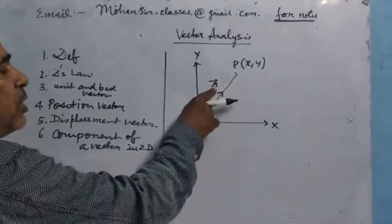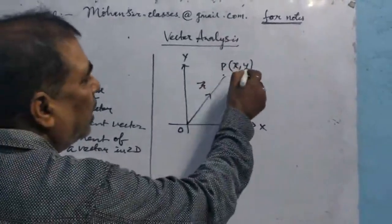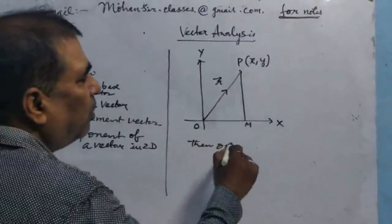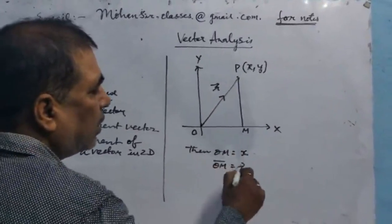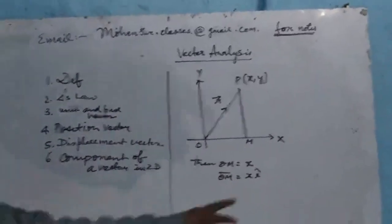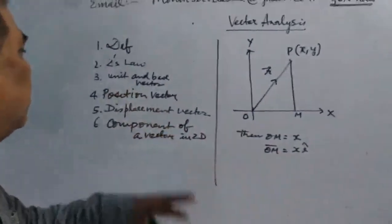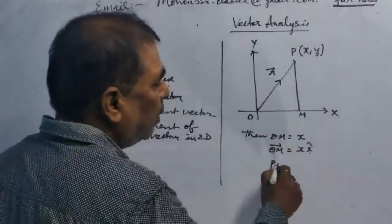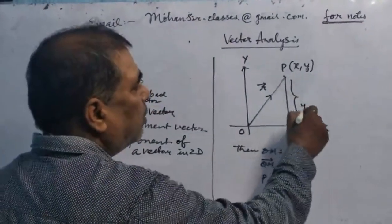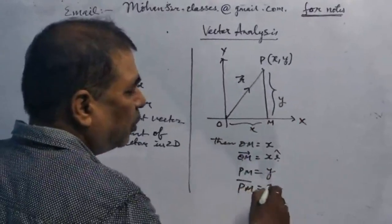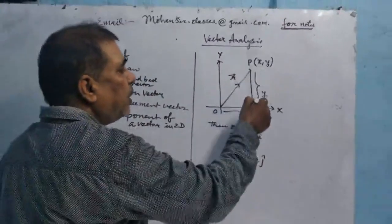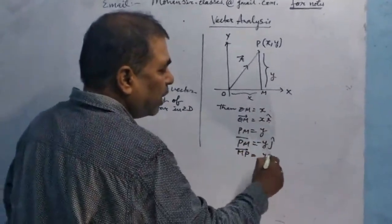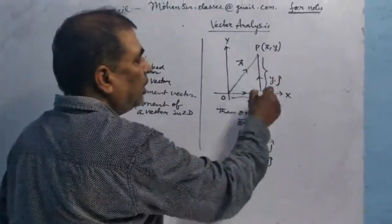The point P has coordinates (x, y). We draw perpendicular PM. Then OM is equal to x, and the vector OM equals xi — because any scalar quantity can be converted into a vector by using a base vector, and along the x-axis the base vector is i. PM is equal to y, so the vector MP equals yj. Since the direction from P to M is along the negative y-axis, the vector PM equals minus yj.